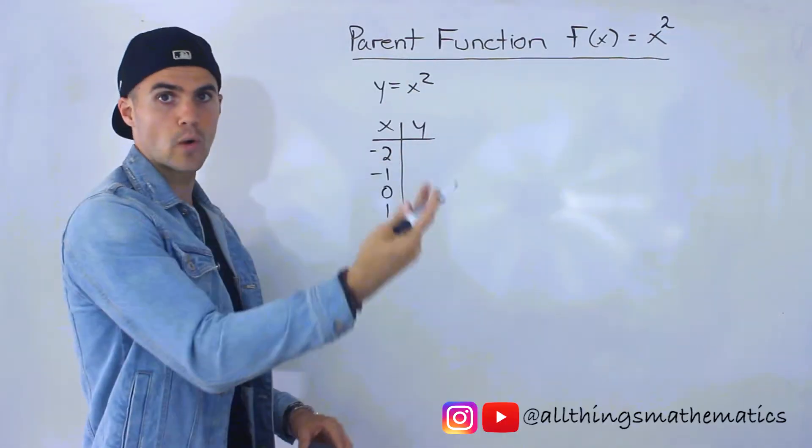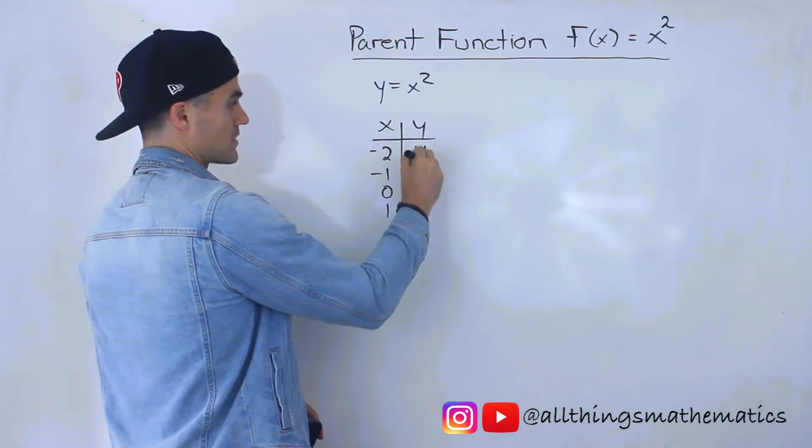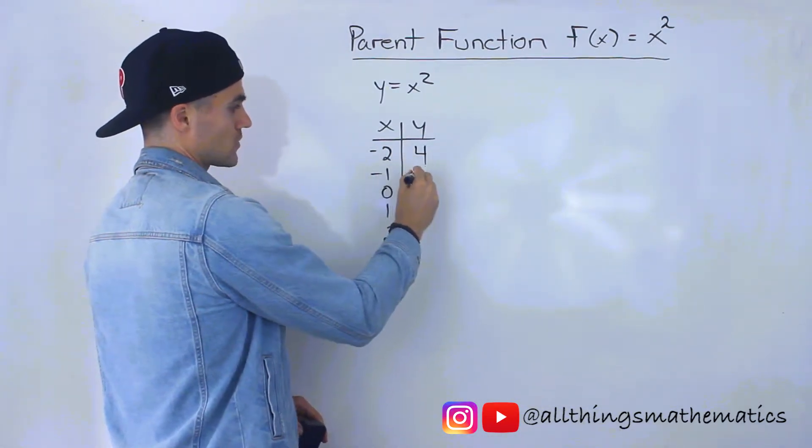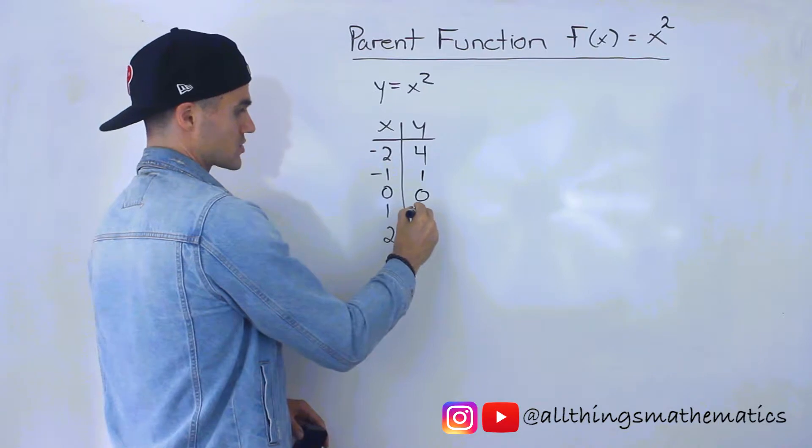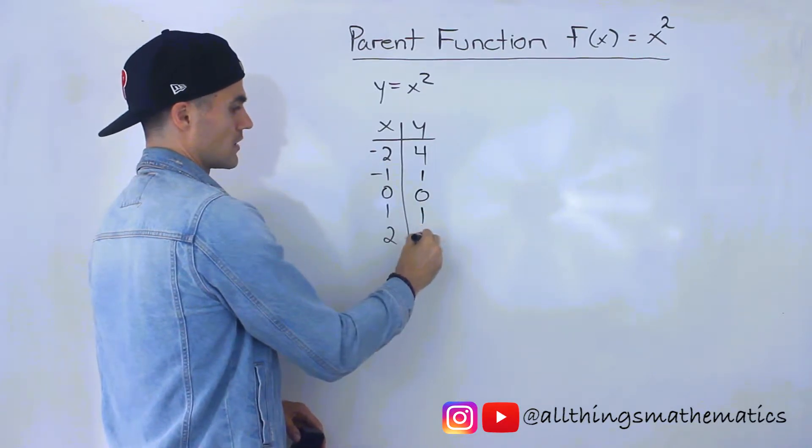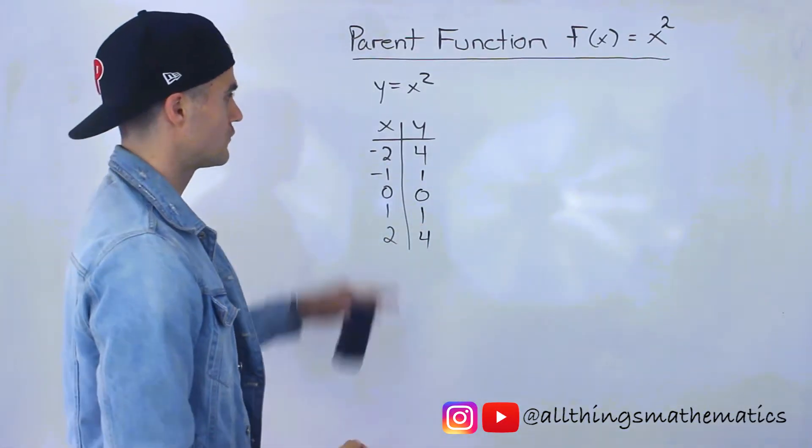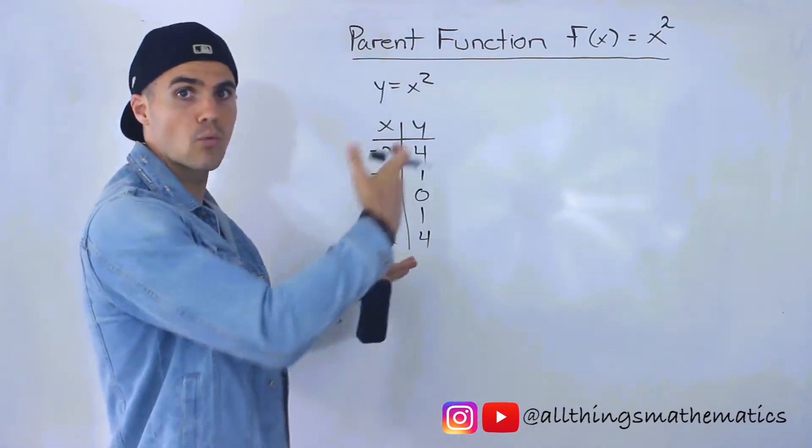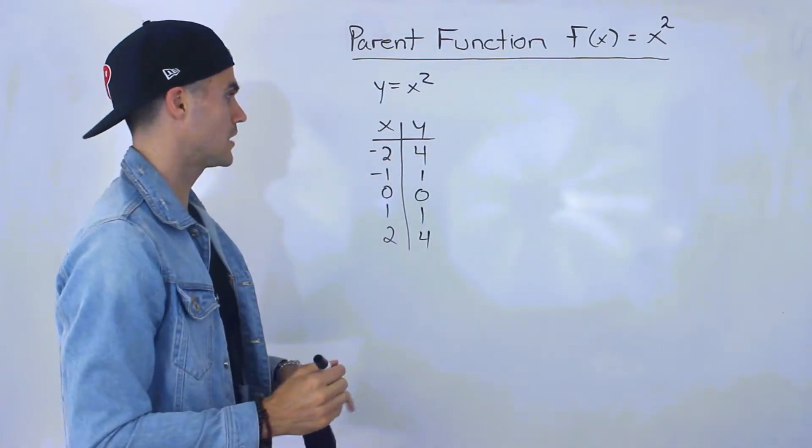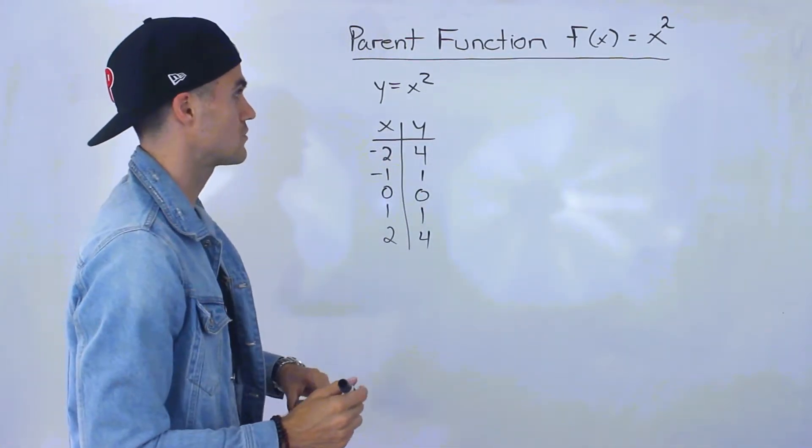So what's negative 2 squared? That would be positive 4. Negative 1 squared is 1, 0 squared is 0, 1 squared is 1, and 2 squared is 4. If you went to negative 3 and positive 3, the y values would be 9, but let's just keep it at negative 2 for now.